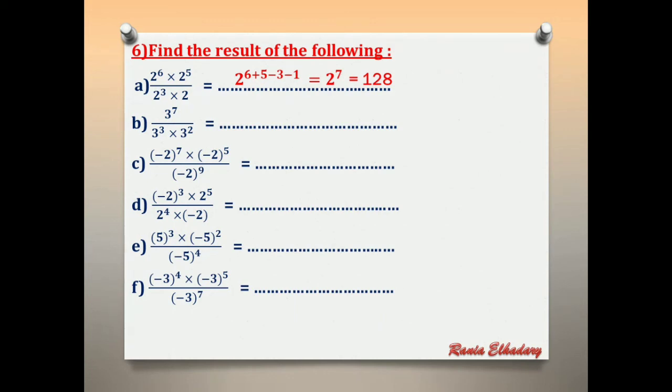Letter B: 3^7 over (3^3 × 3^2). Same base: 3^(7−3−2) = 3^2 = 9.